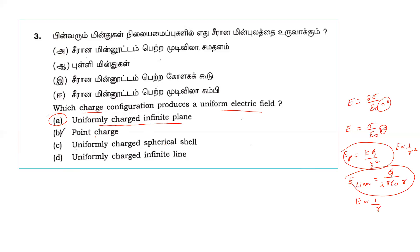In a uniformly charged spherical shell, the field inside is zero and outside varies inversely proportional to R squared. For an infinite line charge, the field varies inversely proportional to R. The charged infinite plane sheet is the correct answer for uniform electric field.